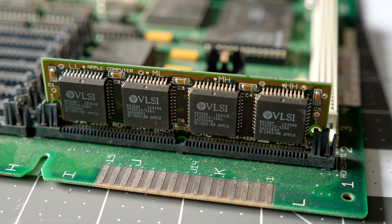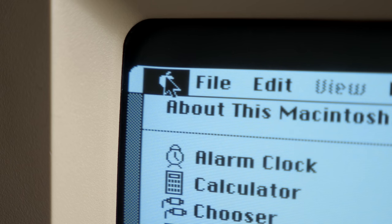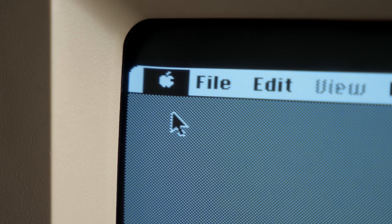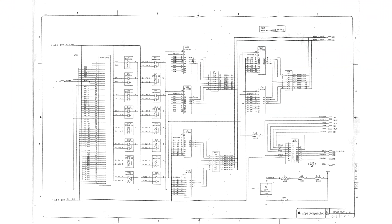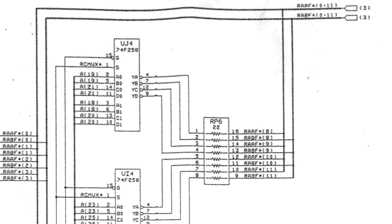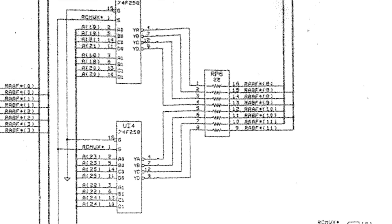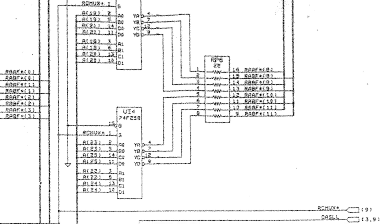Therefore, on Macs, the ROM wasn't just a BIOS, but also a core part of the operating system. It handled things like the bootloader, the behavior of the menu bar, and even drawing the mouse cursor. The ROM was so integral to the operation of early Macs that it actually shared address lines with the RAM, acting as a sort of extension of the computer's memory, albeit a read-only one.